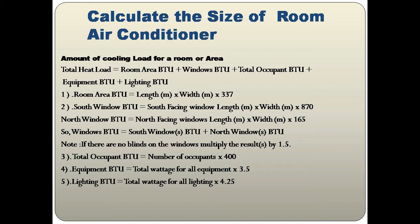To calculate Room Area BTU, it's very simple: multiply length by width by 337. The factor 337 converts the room area in square meters into BTU.